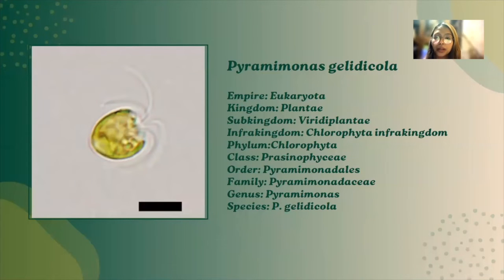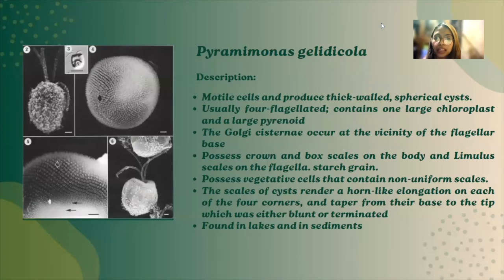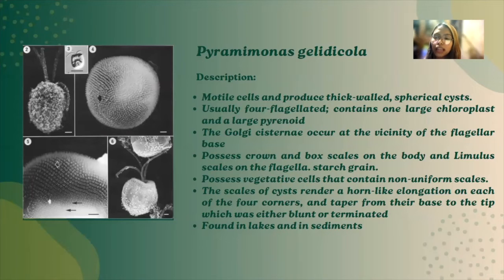Next is Pyramimonas gelidicola, Empire Eukaryota, Kingdom Plantae, Subkingdom Viridiplantae, Phylum Chlorophyta, Class Prasinophyceae, Order Pyramimonadales, Family Pyramimonadaceae, Genus Pyramimonas, and Species gelidicola. These organisms are marine and produce thick-walled spherical cysts. They are usually four-flagellated and contain one large chloroplast and a large pyrenoid. The Golgi cisternae occur at the vicinity of the flagellar base. They possess crown and box scales on the body and limulus scales on the flagella. They also contain starch grain. They possess degenerative cells that contain non-uniform scales, and the scales of cysts render a horn-like elongation on each of the four corners, tapering from their base to the tip. They are found in lakes and in sediments.